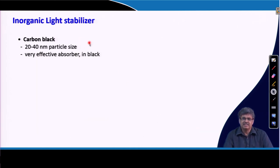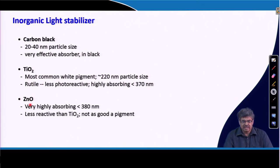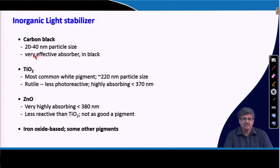HALS stop radicals from performing oxidative reactions, which is why they are called free radical scavengers. There are also inorganic stabilizers like carbon black, TiO2, and ZnO, which are very effective. However, if transparency is required in the application, these inorganic stabilizers cannot be used because adding carbon black, TiO2, or ZnO invariably reduces transparency.